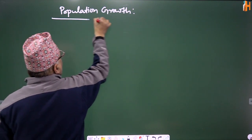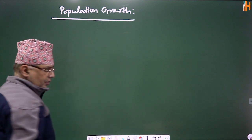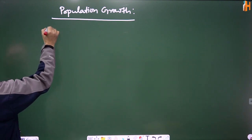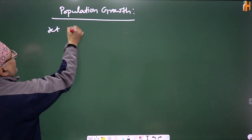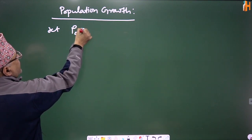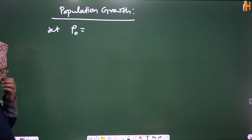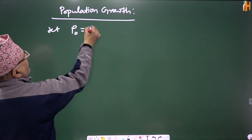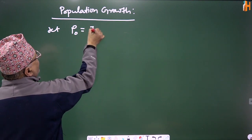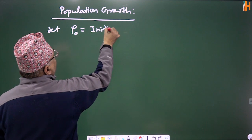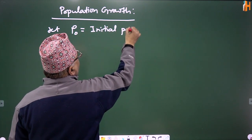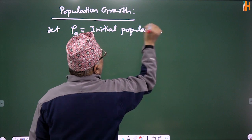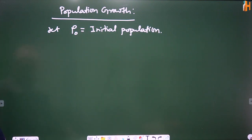Population growth. Let P0 — using proper notation — denote P0, the initial population.